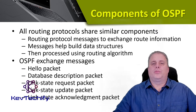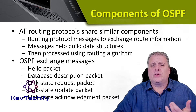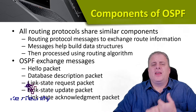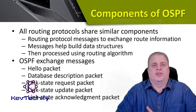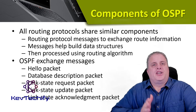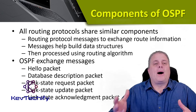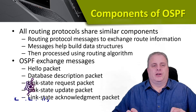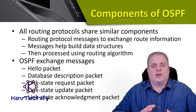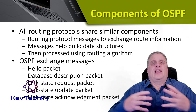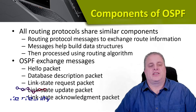When we talk about routing protocols, they all share similar components. They all share a method to exchange routing information — typically called routing protocol messages — where they can share information between routers. Those messages are used to build a data structure, a database, about all of that information. Once that database is built, the routing protocol uses an algorithm to figure out what is the best path, the most efficient way across the network from the source to the destination.